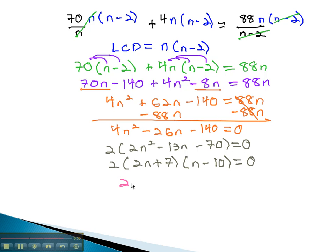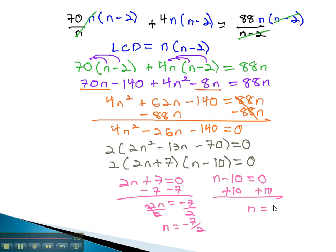We can now set each factor equal to 0. 2n plus 7 equals 0, and n minus 10 equals 0. And solve these equations by subtracting 7 and dividing by 2 to get n equals negative 7 halves, or adding 10 to the other equation to get n equals 10.